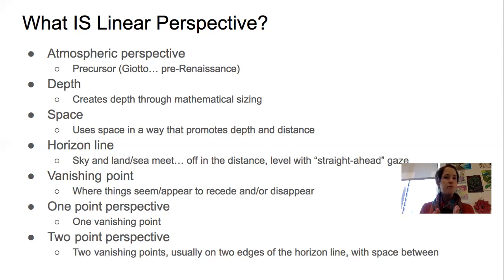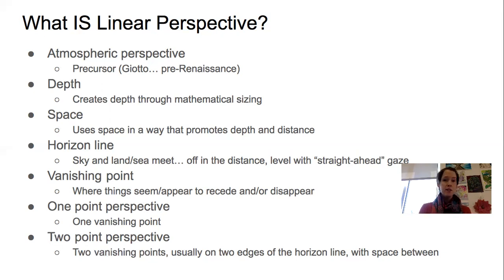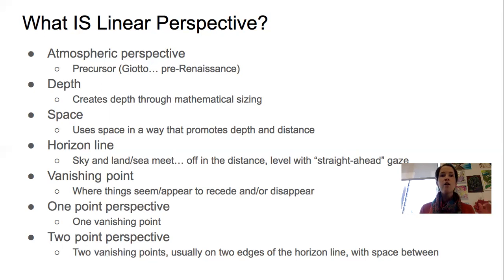So, brief overview: atmospheric perspective is just guessing at the sizing and placement of things, still conveying depth and space. But linear perspective, which comes from the Renaissance, is a much more specific mathematical way to achieve depth and space using the horizon line and the vanishing point.